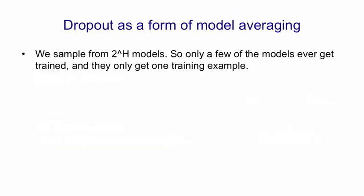So we can think of dropout as a form of model averaging. We sample from these 2 to the H models. Most of the models, in fact, will never be sampled. And a model that is sampled only gets one training example. That's a very extreme form of bagging. The training sets are very different for the different models, but they're also very small.